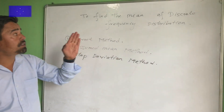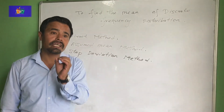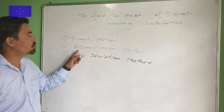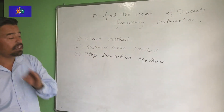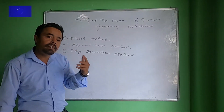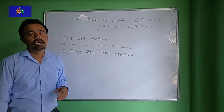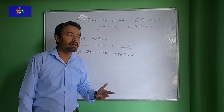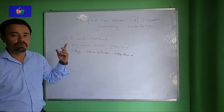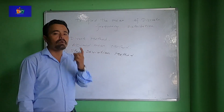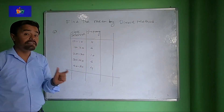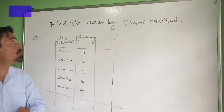Discrete frequency distribution uses three methods: 1. Direct method, 2. Assumed mean method, and 3. Step deviation method. Example question one: find the mean by direct method.